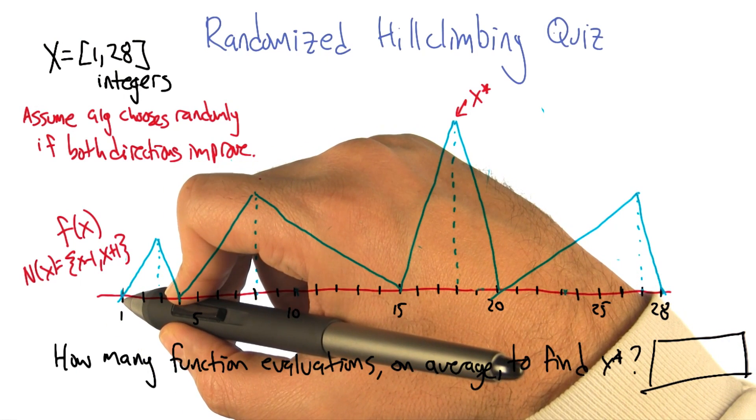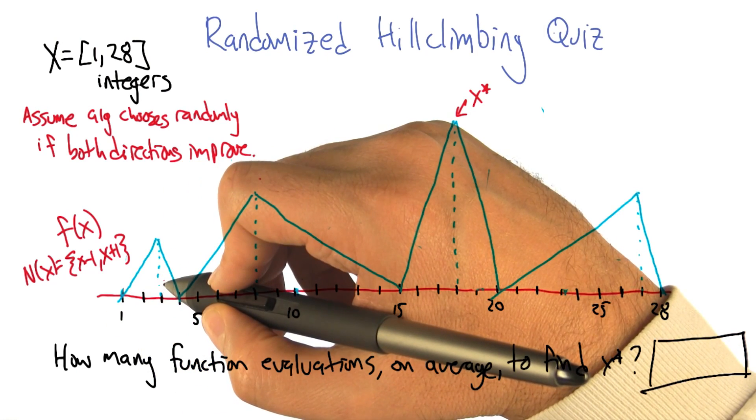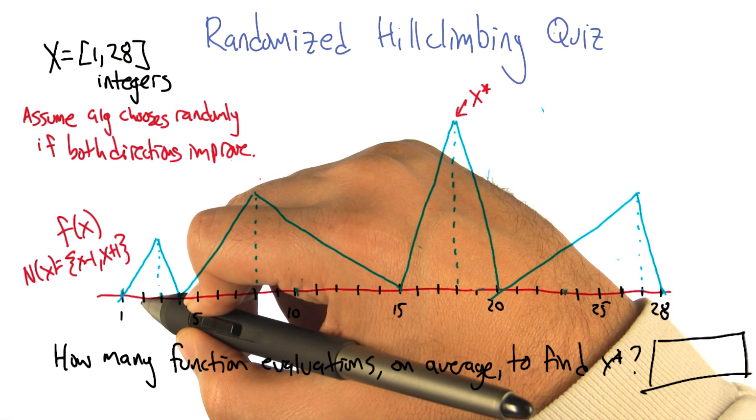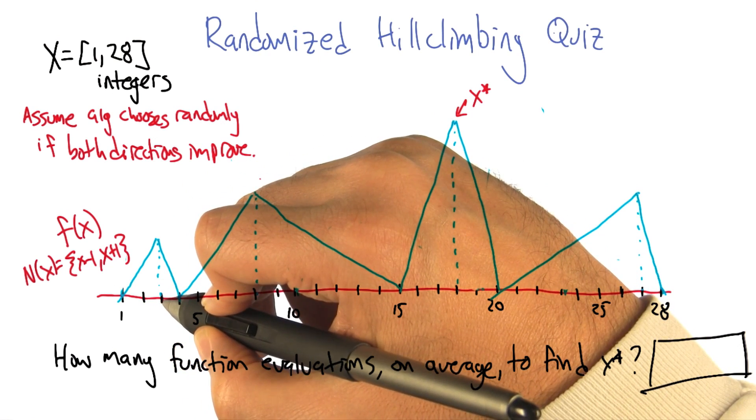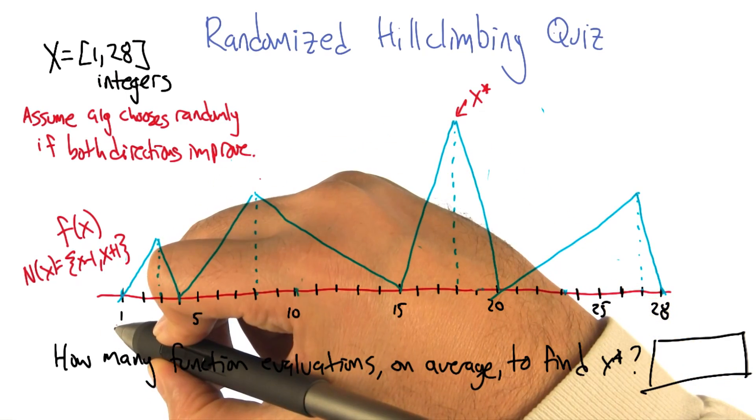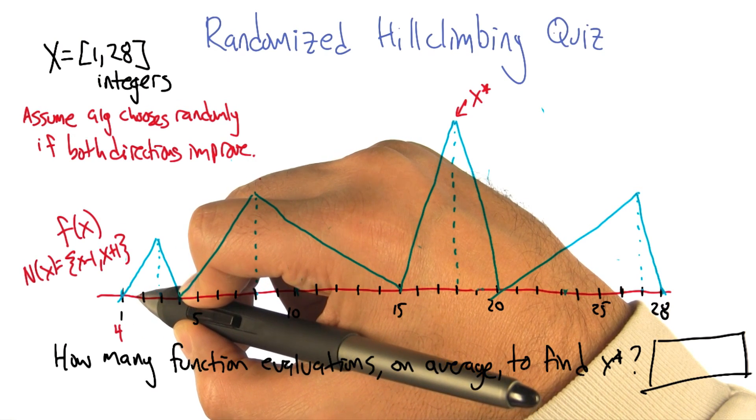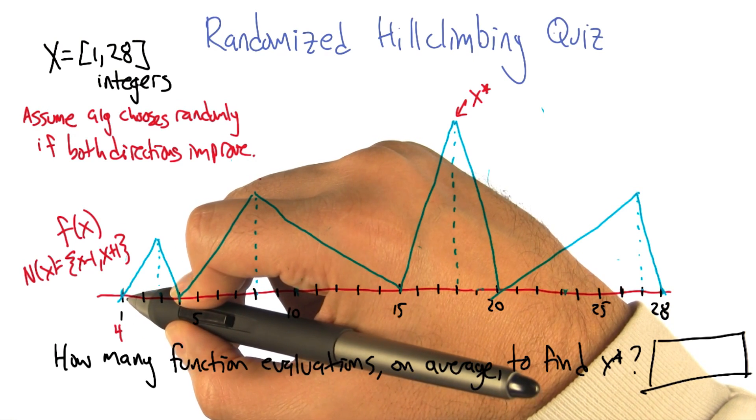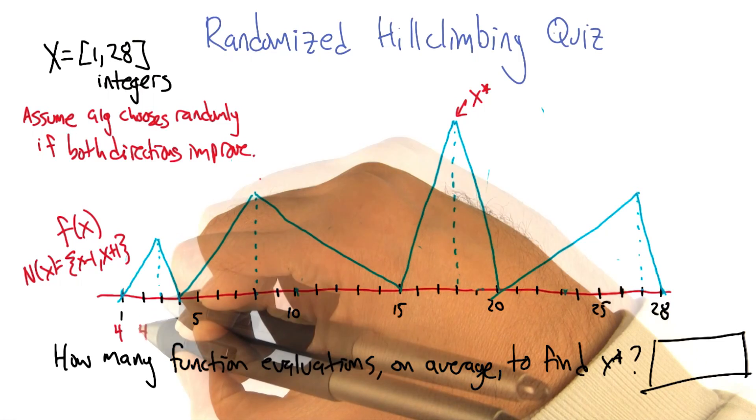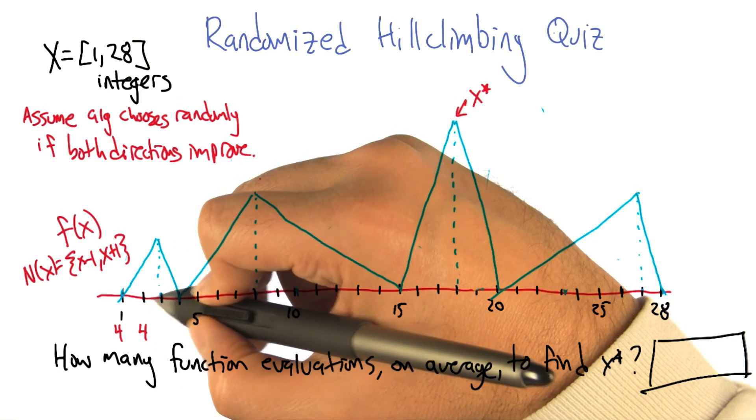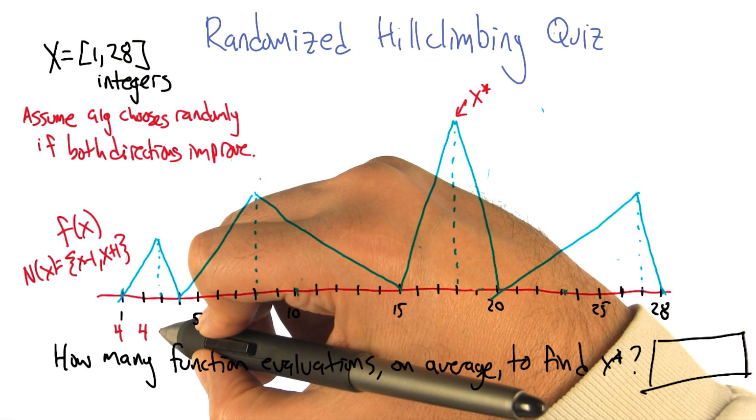So if you happen to start at one, how many steps is it before you realize that you're at one? You have to evaluate one, you have to evaluate two, you have to evaluate three, and you have to evaluate four to see that you're a local optimum. So there's going to be four evaluations if you start at one. If you start at two, then you're going to have to evaluate one, two, three, and four again. If you start at three, then you only need to evaluate two, three, and four to know that you're at a local optimum.